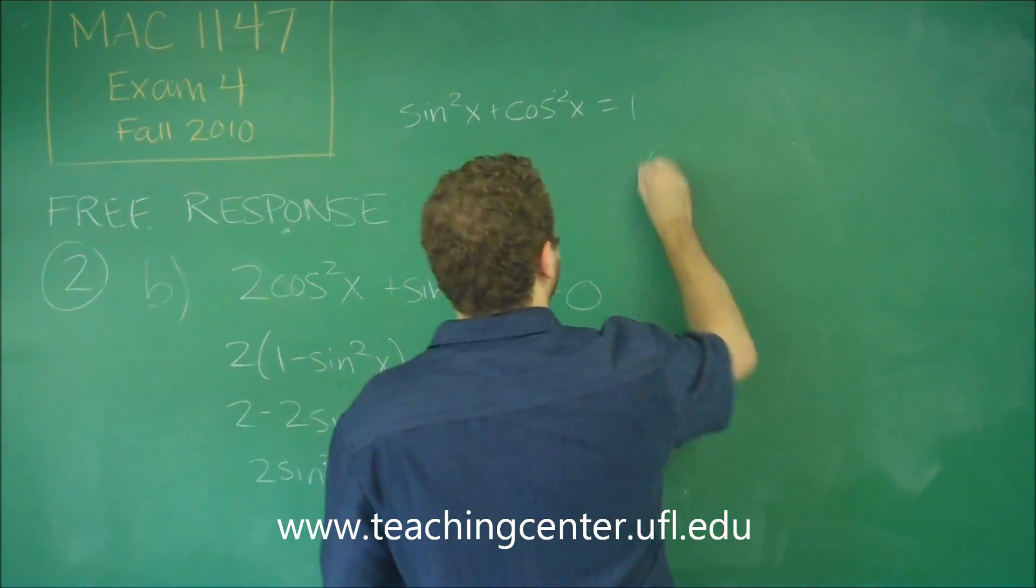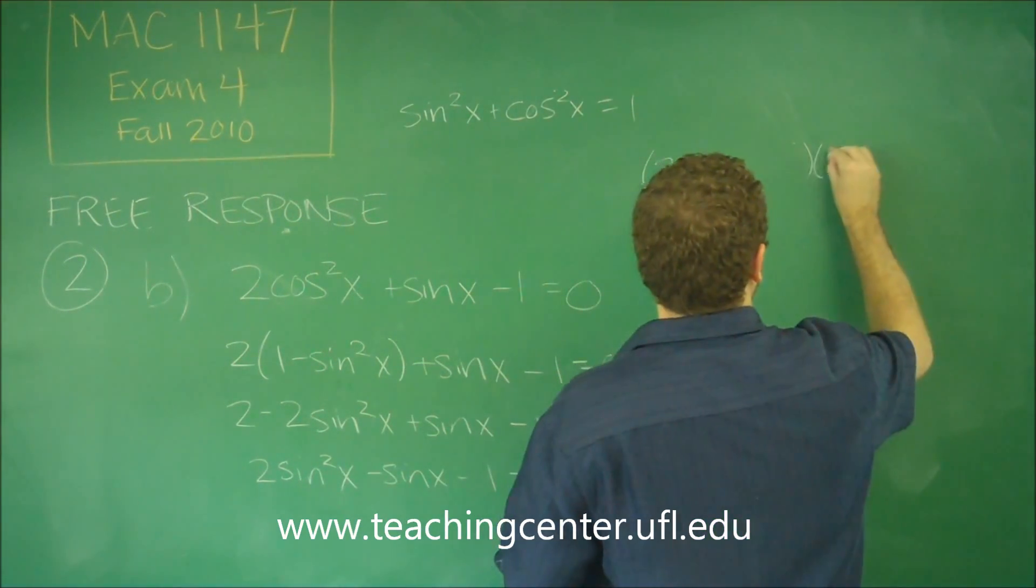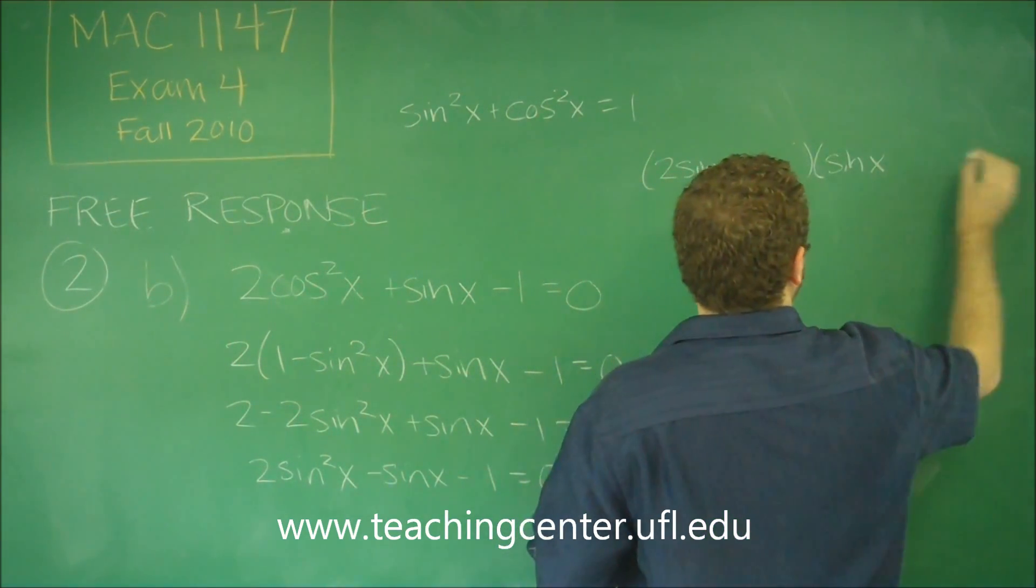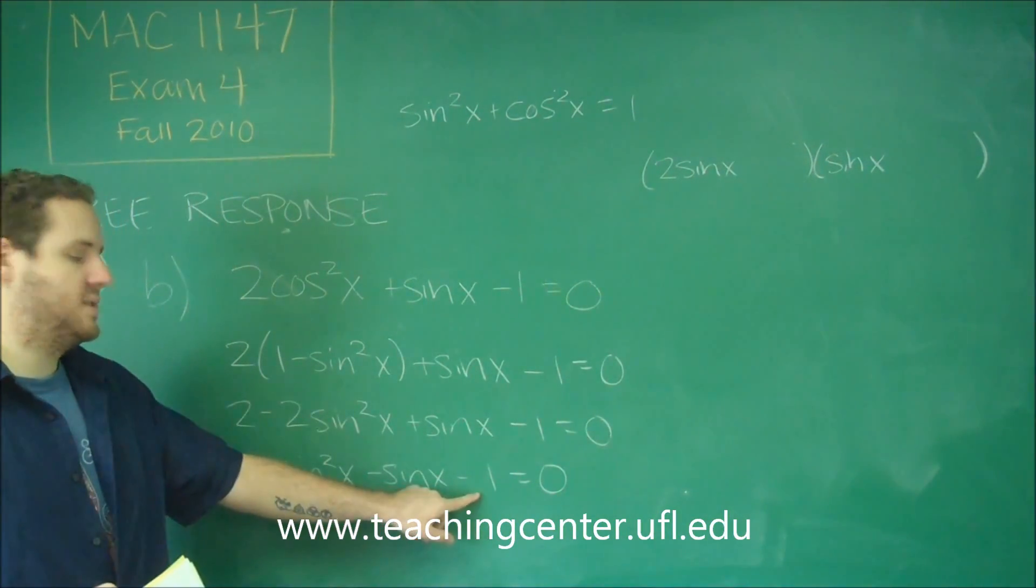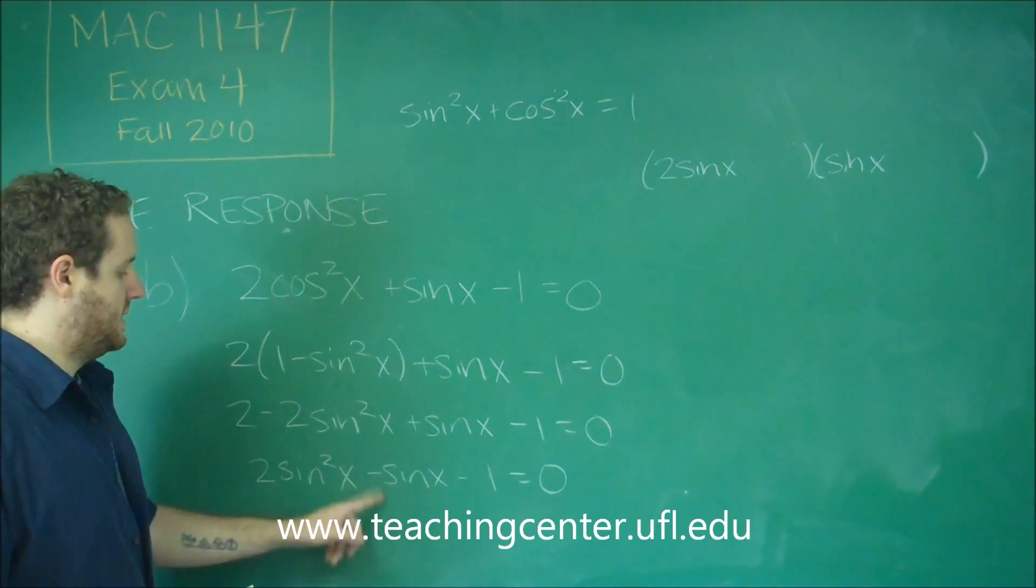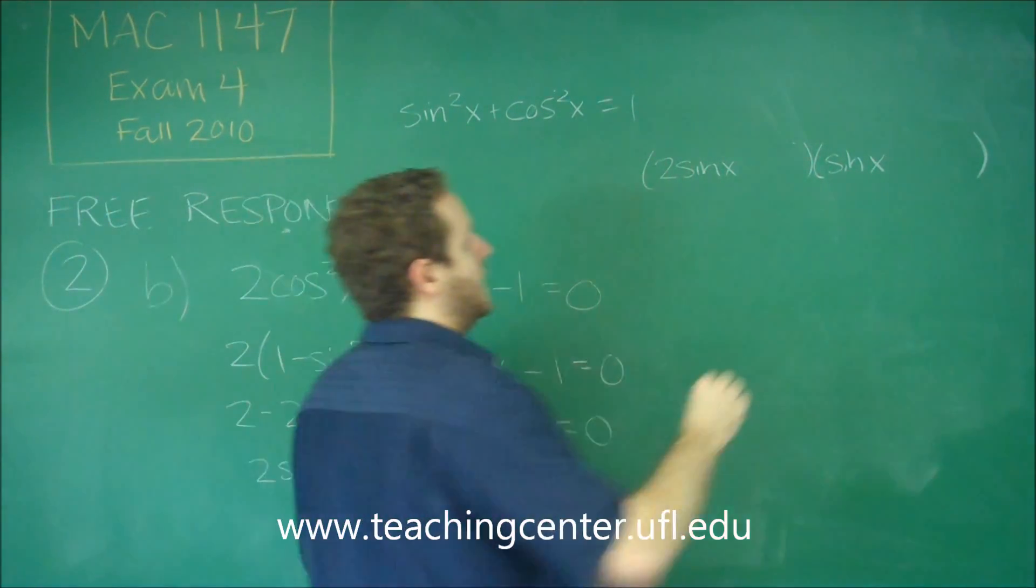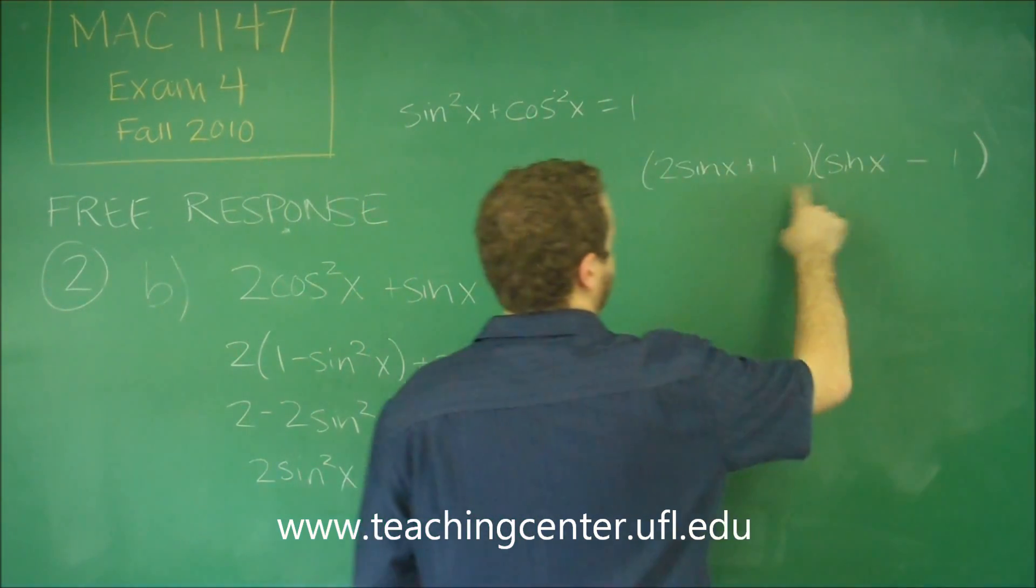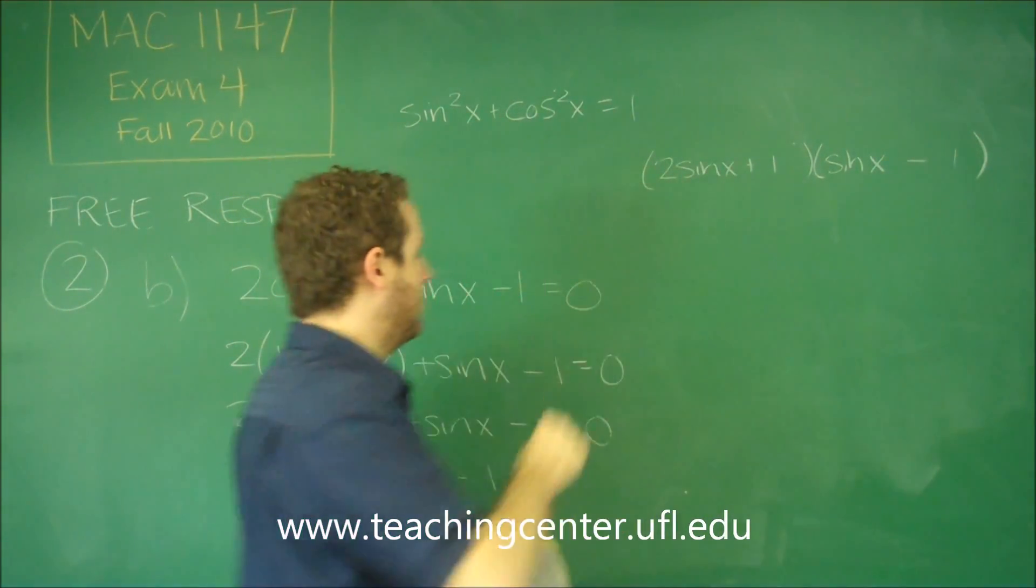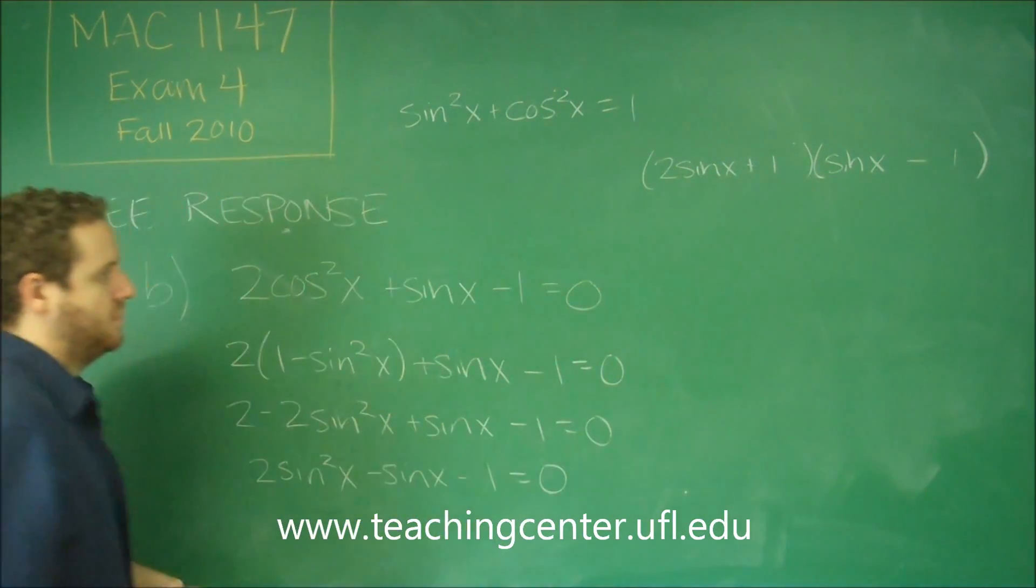So when you factor this, you're going to get 2 sine x and something, and sine x and something. So we need multiplication to negative 1, and addition to negative 1 also. So the only way we could do that is if this was plus 1 minus 1. So we'd have plus sine x minus 2 gives you negative 1, plus 1 times negative 1 gives you negative 1.